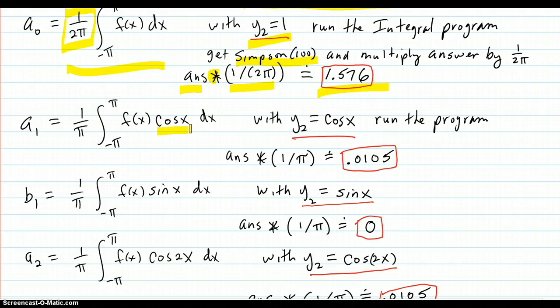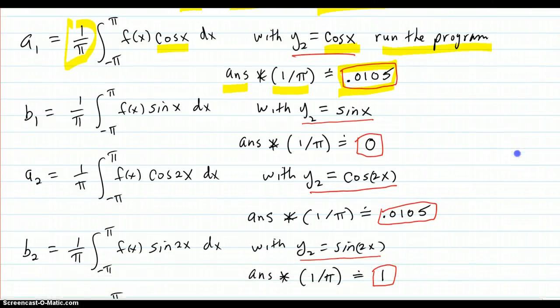Now you're going to go to a1. You need the cosine to be in there. So change the y2 in the calculator to cosine x. Then run the program. Take your answer, multiply by 1 over pi, not 1 over 2 pi, 1 over pi. Turns out 0.0105.